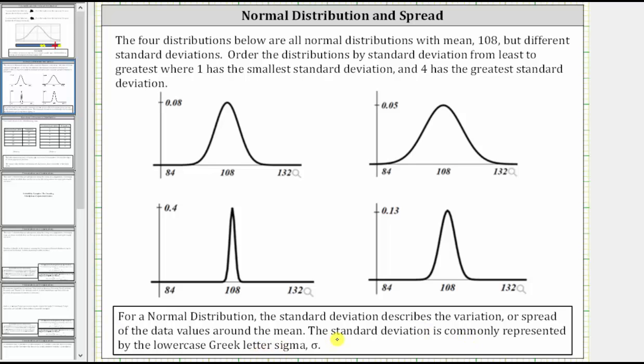Looking at the four graphs, notice how all of the horizontal axes are the same, but the vertical axes are different, which indicate the relative frequency. To better understand how the standard deviation affects the graph of a normal distribution, let's look at an animation.